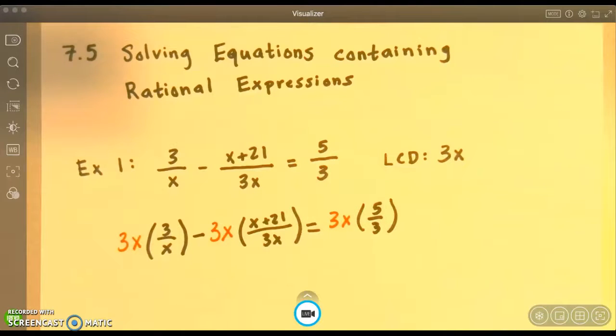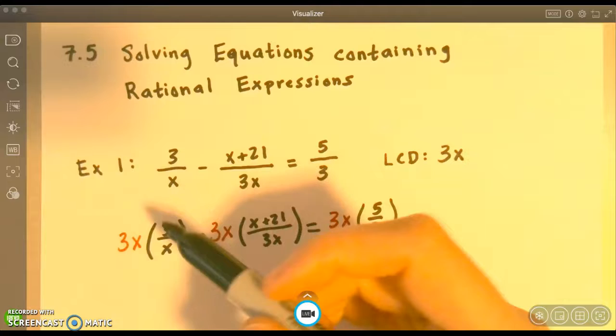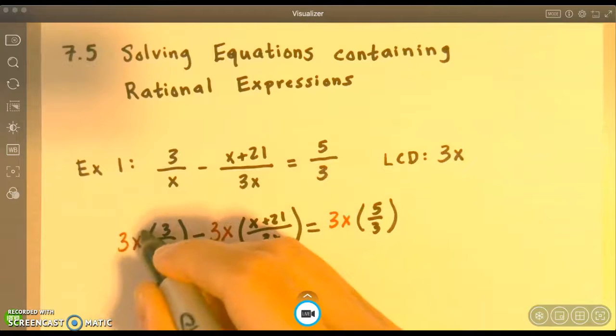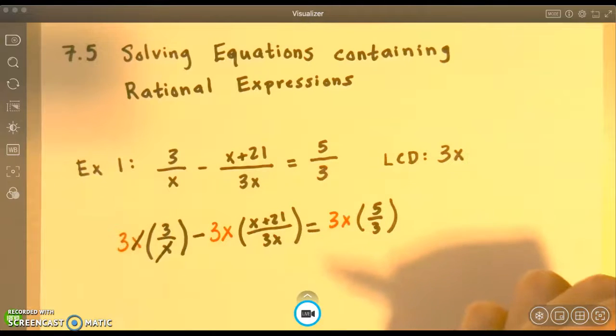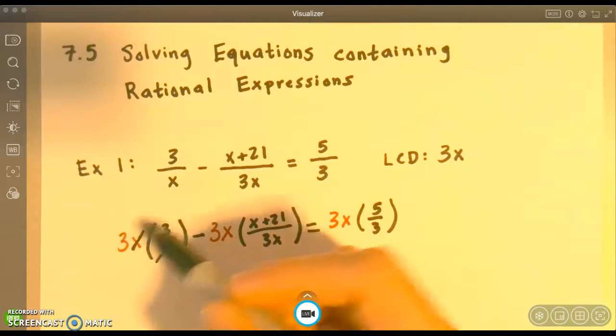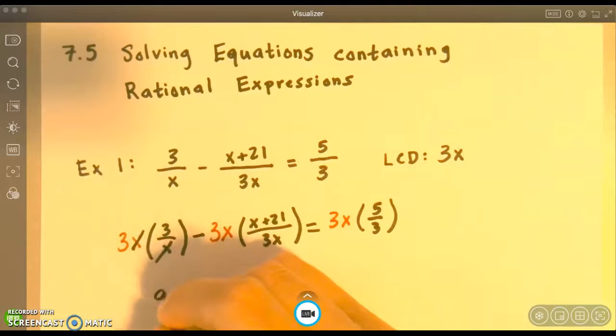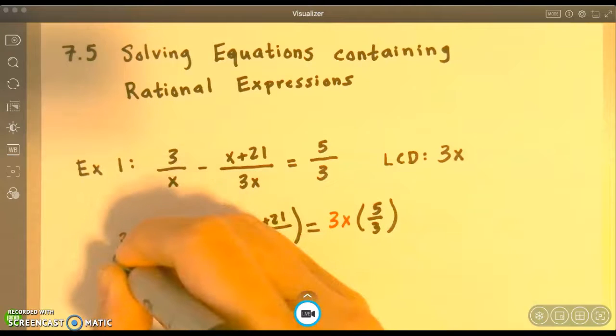Now, before I start multiplying, I can cross-simplify. Here, these x's cancel out, and all I'm left with is 3 times 3, which is 9. Remember, if it's easier, this is over 1.